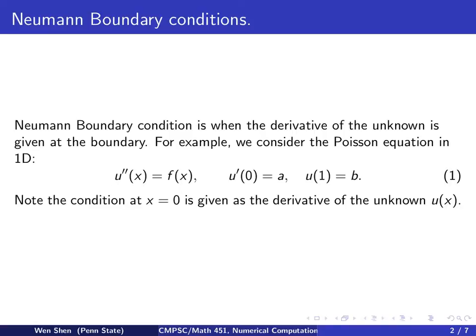Neumann boundary conditions is when the derivative of the unknown is given at the boundary, not the unknown itself. For example, we now consider the Poisson equation in 1D: u'' = f(x), u'(0) = a, and u(1) = b. Notice this new type of boundary condition is given in the derivatives of the unknown.